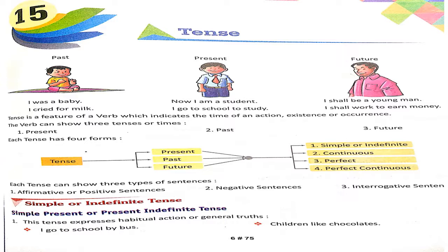Now each of these three tenses has three to four forms. As you can see the structure on screen: tenses are present, past, and future. Each has Simple/Indefinite (also called Assertive or Affirmative), Continuous, Perfect, and Perfect Continuous forms. We will read all of them one by one. In each of these you can make affirmative or positive sentences, negative sentences, or interrogative sentences.